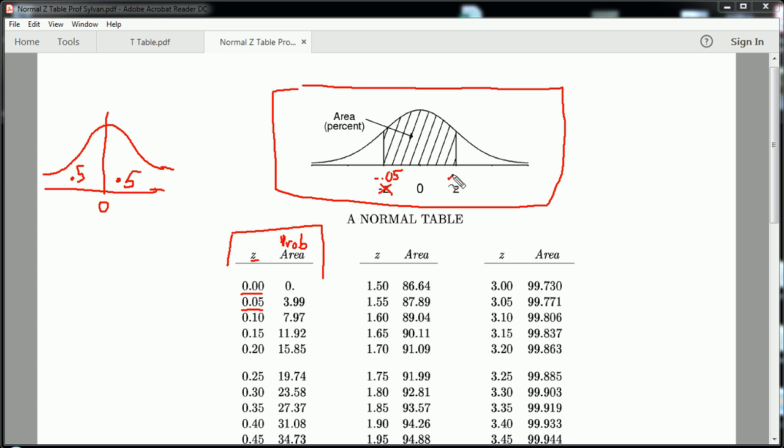Be careful, what I'm writing here are Z values. Don't confuse them with probabilities. So what this row right here is saying is that the probability of getting a Z value between negative 0.05 and positive 0.05 is equal to 0.0399. That's a percentage.